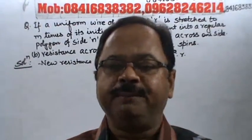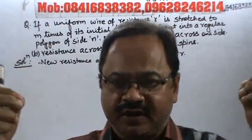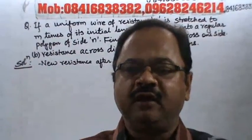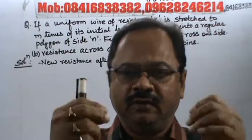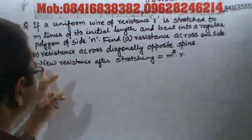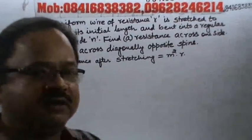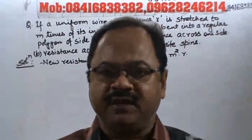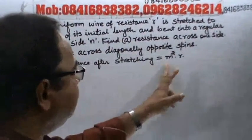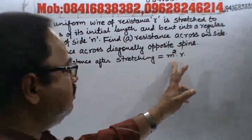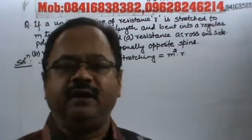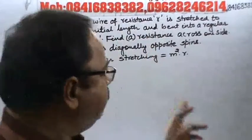Now, you can tell us that when a wire is stretched m times of its original length, what is the new resistance? So, it becomes m squared times of R. So, new resistance after stretching, when the wire is stretched m times, the new resistance of the wire is m squared times of R.